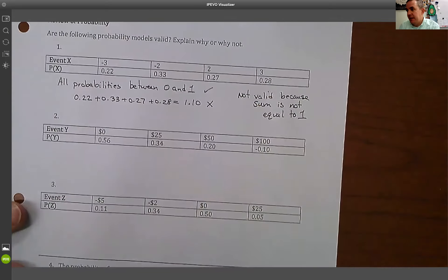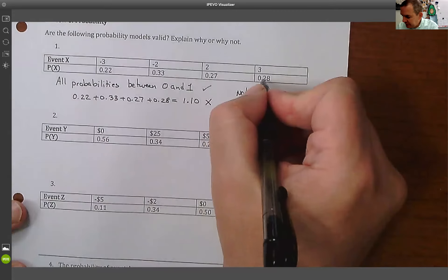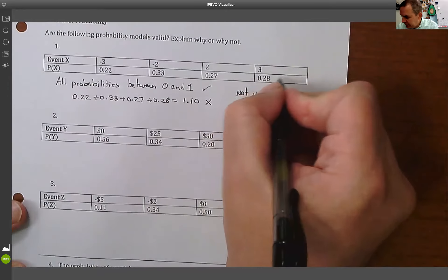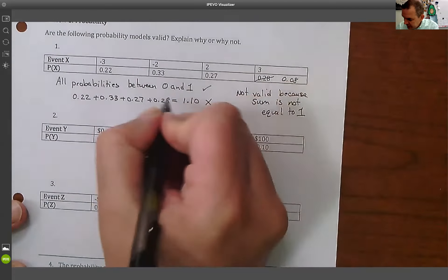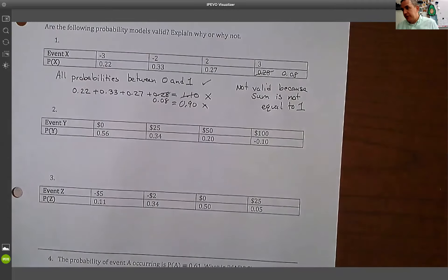Okay, so it would have been valid if this thing had been 0.08 instead. So let's say instead of 0.28, this had been 0.08. That would have made this probability equal to 0.90. It still would have violated because it didn't sum to 1. So the rules are: all the probabilities have to be between 0 and 1, and they have to sum to 1.